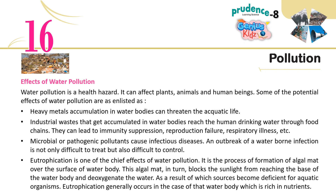Eutrophication is one of the chief effects of water pollution. It is the process of formation of an algal mat over the surface of a water body. This algal mat blocks the sunlight from reaching the base of the water body and deoxygenates the water. As a result, oxygen sources become deficient for aquatic organisms. Eutrophication generally occurs in water bodies that are rich in nutrients.